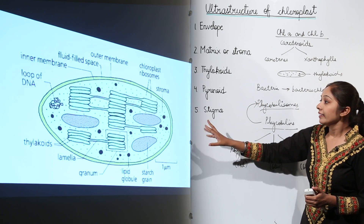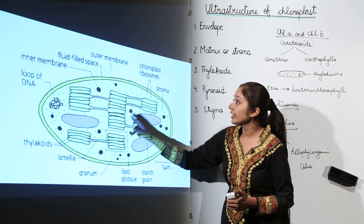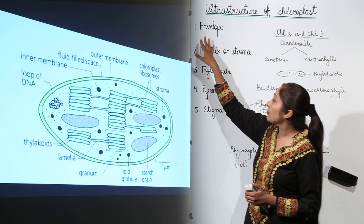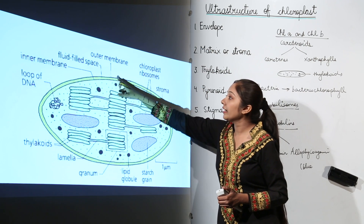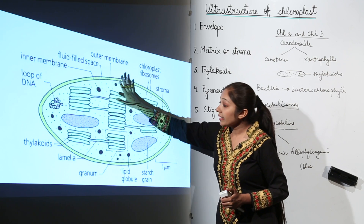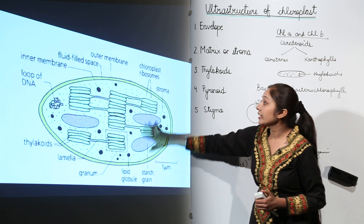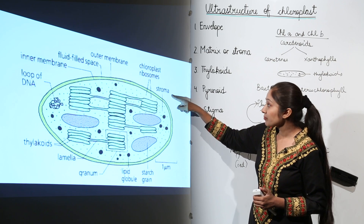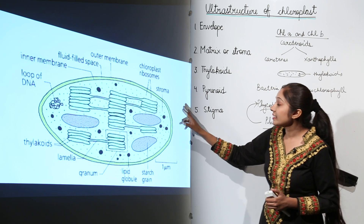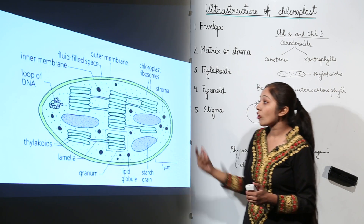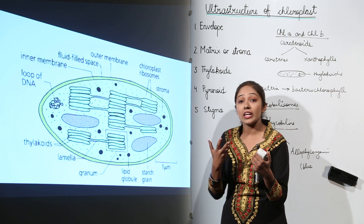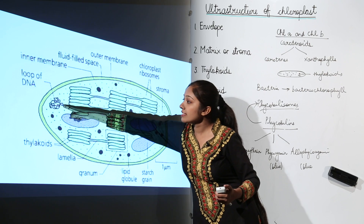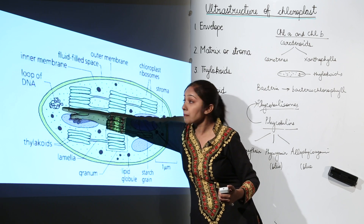Moving on, we have a complete structure of chloroplasts in which thylakoids are arranged very clearly. Let us recall: we talked about the envelope, which has an outer membrane and inner membrane. Inside the envelope there is a matrix, which we also call stroma.